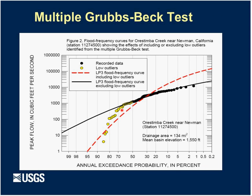There are also low outliers, especially in the desert. If you try to include them, they distort the fit at the upper end where flood frequencies matter most. There's a new method called the multiple Grubbs-Beck test that allows you to remove multiple low outliers and get a better fit at the upper end, where the 100-year flood and larger events are estimated. We incorporated this method as well.